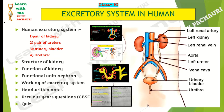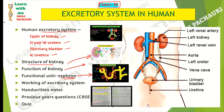Hello everyone, today in this video we are going to study about the excretory system in humans. This is a Class 10th topic. In this video we will discuss the excretory system — pair of kidneys, ureter, bladder, urethra — structure of kidney, function of kidney, and the functional unit which is a nephron. We will study the working and function of the nephron in detail. Handwritten notes will be provided, completely based on the NCERT book. Previous years' questions will also be there so you get an idea of what type of questions can come from this topic, and one question will be there for you as a quiz, the answer to which you have to write in the comment section.